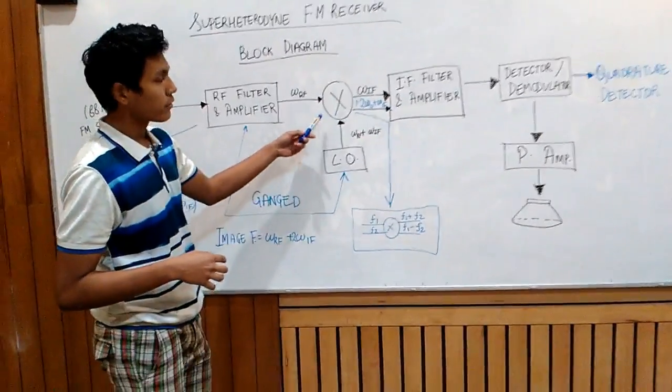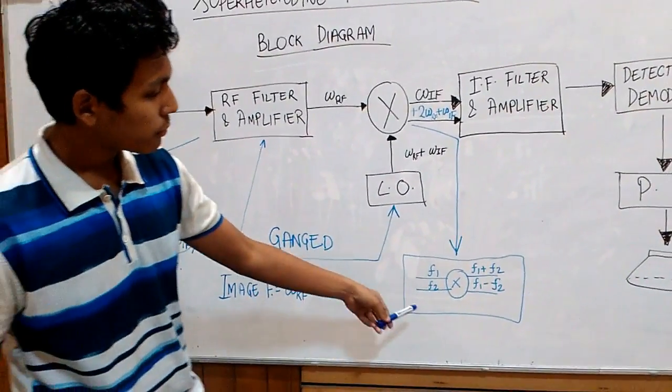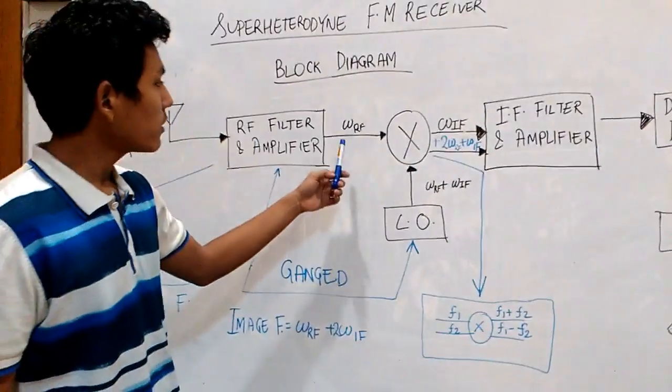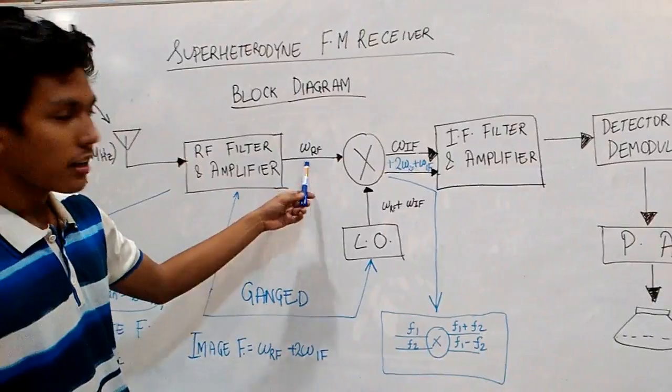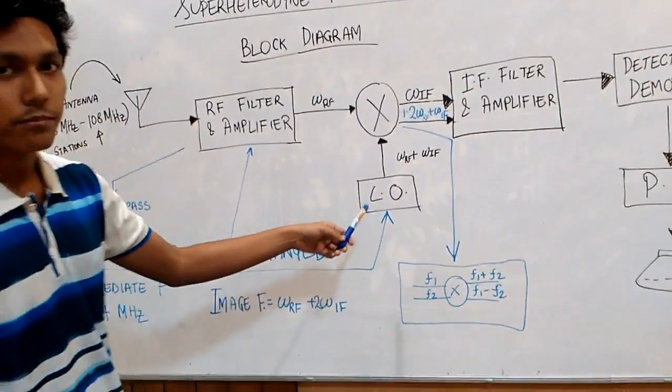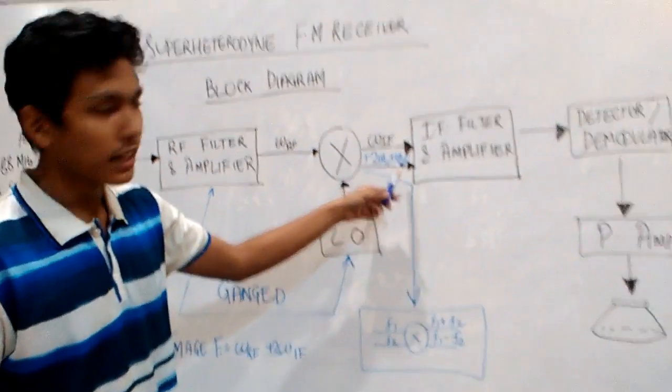Then comes the stage which involves a mixer. A mixer is a kind of a phase detector which has two inputs and two outputs. In this particular FM receiver, the inputs are omega RF and omega RF plus omega IF, which is being produced by a local oscillator. The two outputs thus are omega IF and twice omega RF plus omega IF.